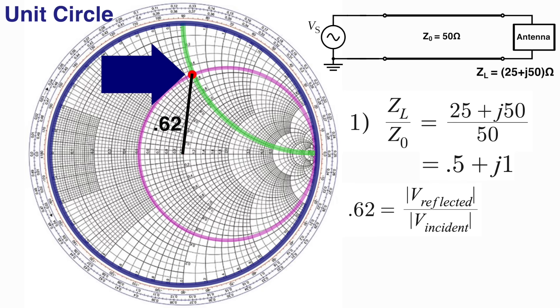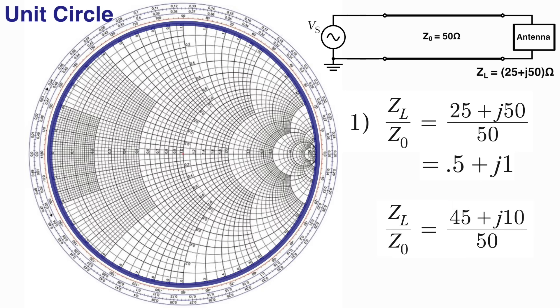So if now the antenna's impedance was something like 45 plus J10 instead, then normalizing that and finding the associated circles, we'd find an intersection point much closer to the origin, meaning less reflection. And that's because the impedance of our load is now more closely matched to our 50 ohm transmission line, the real parts being 45 versus 50 respectively, pretty close. And then the imaginary values are 10 versus zero, also closer than before.